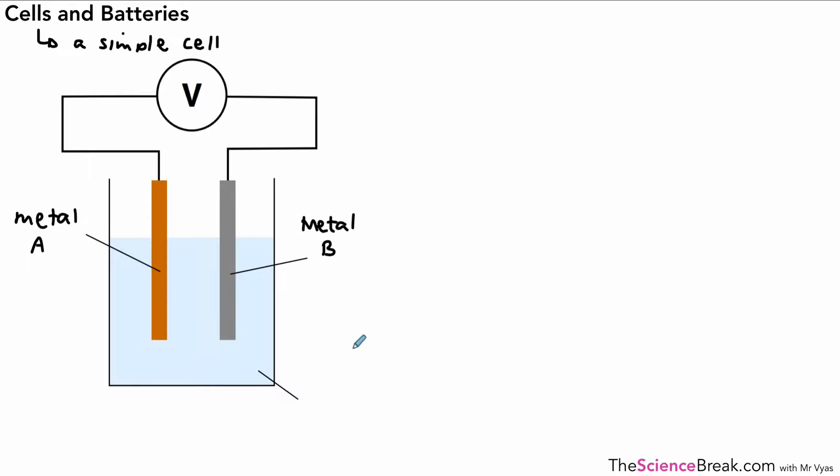So here we've got, let's call it for example metal A, and the other one is metal B, and those are both in an electrolyte. And an electrolyte is a solution that contains ions, for example sodium chloride. And this will produce a potential difference or a voltage, for example 1.1 or 0.5 volts, but this can be produced by the two metals being placed in an electrolyte.